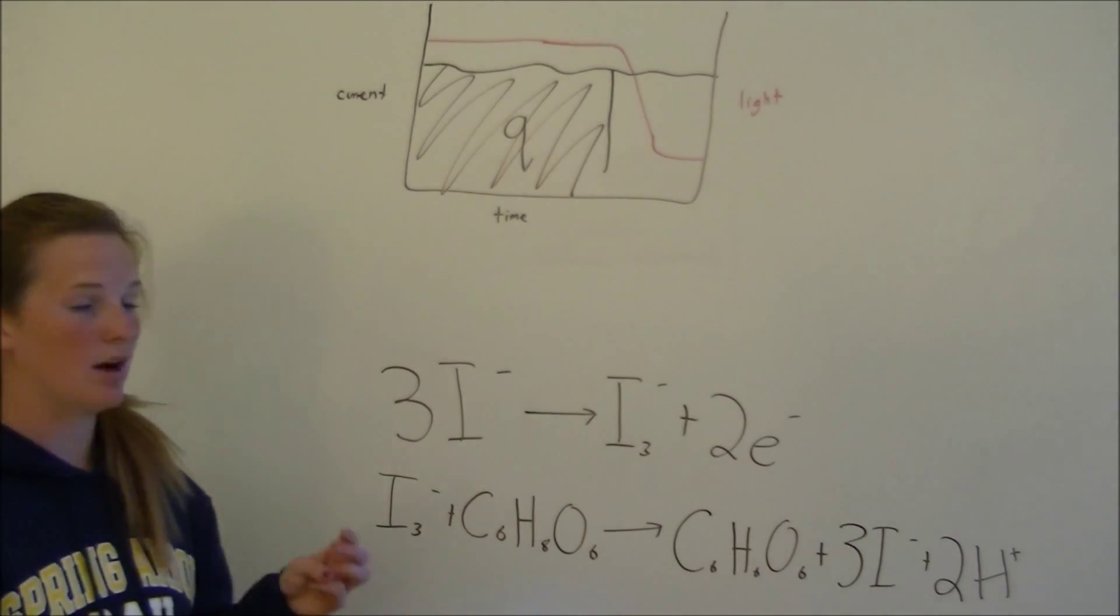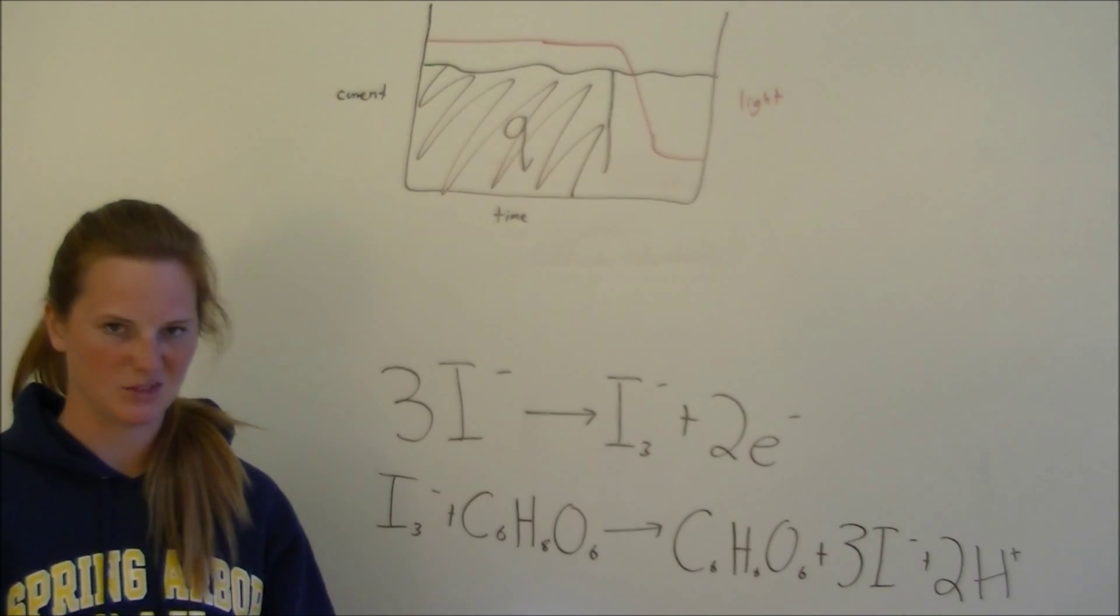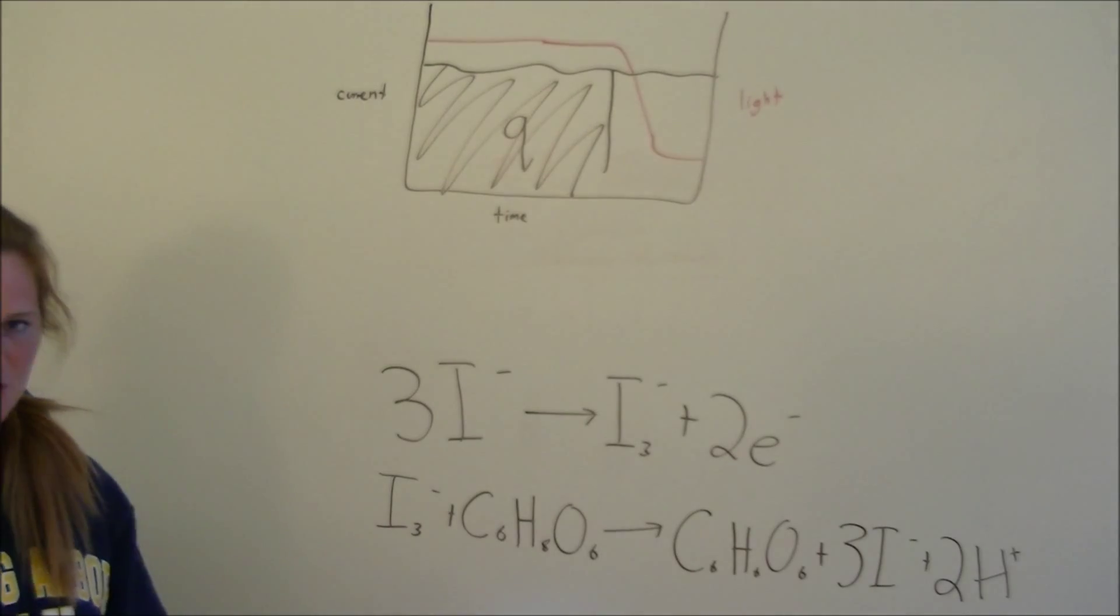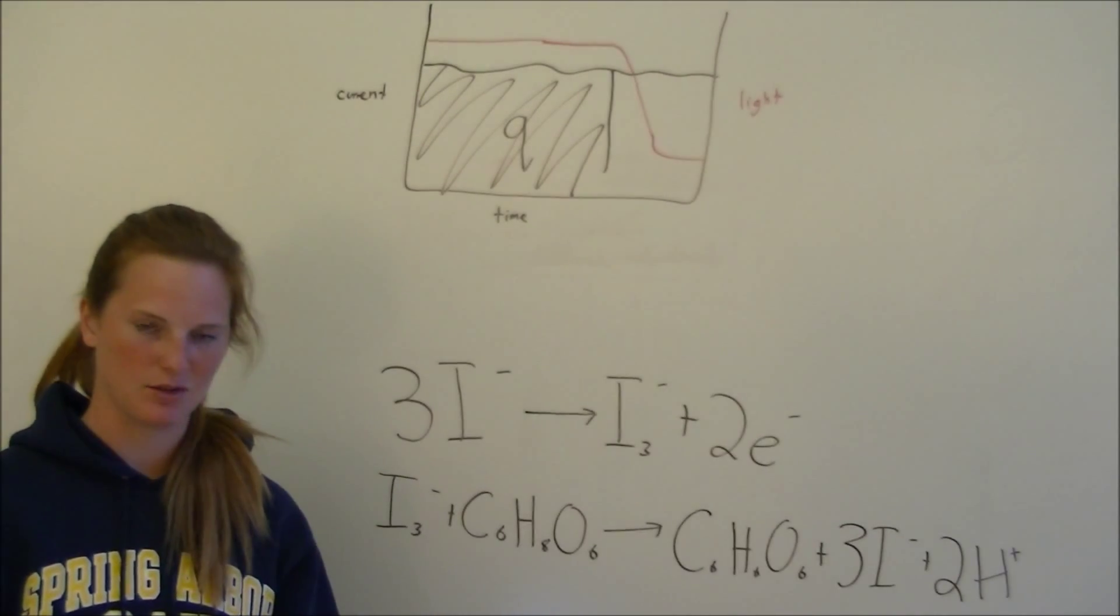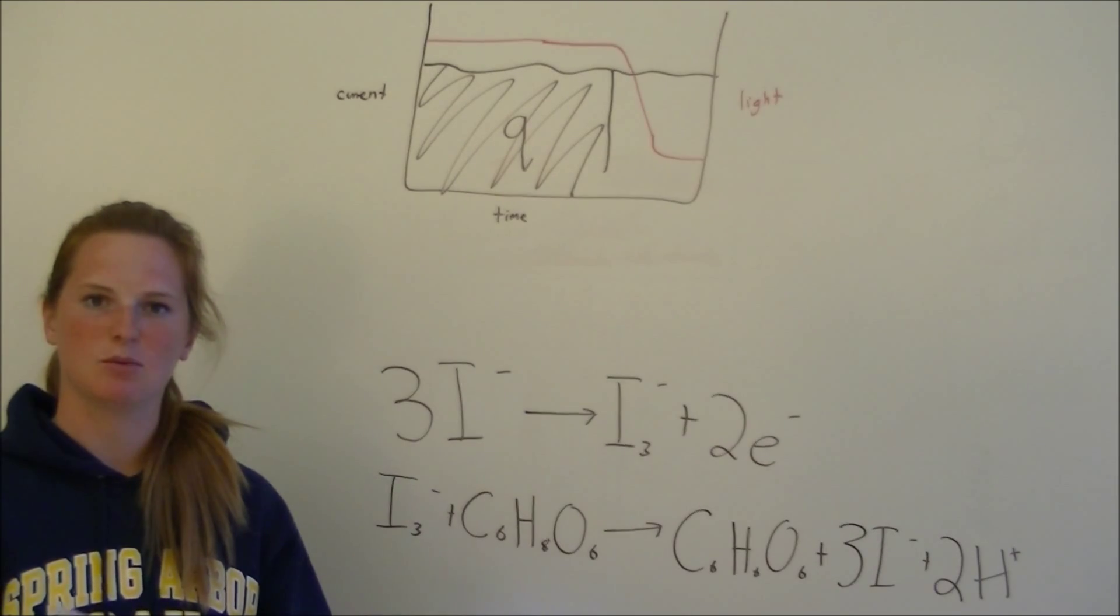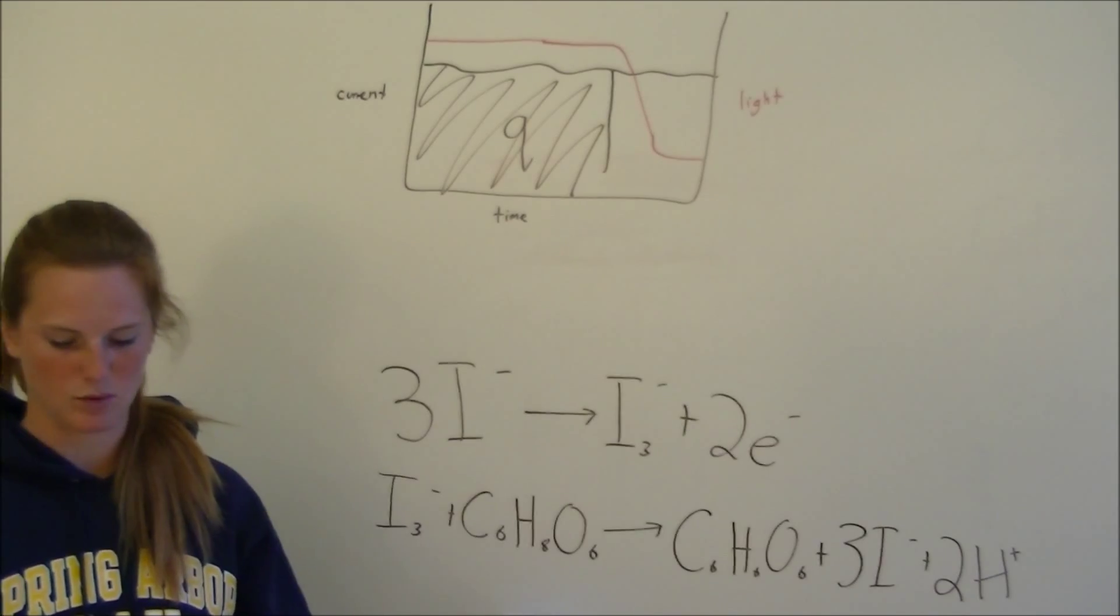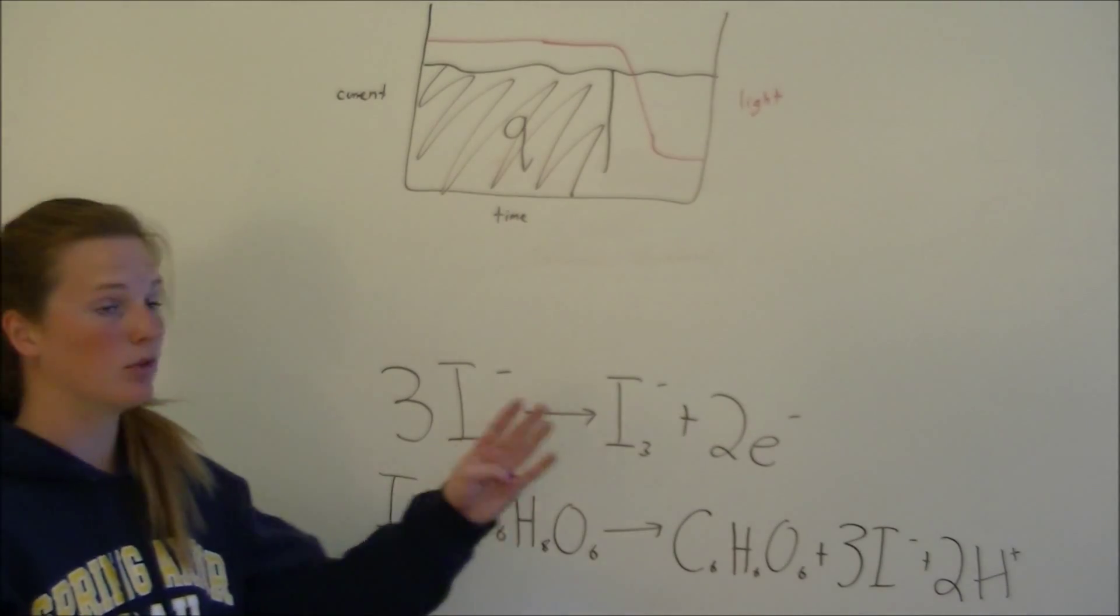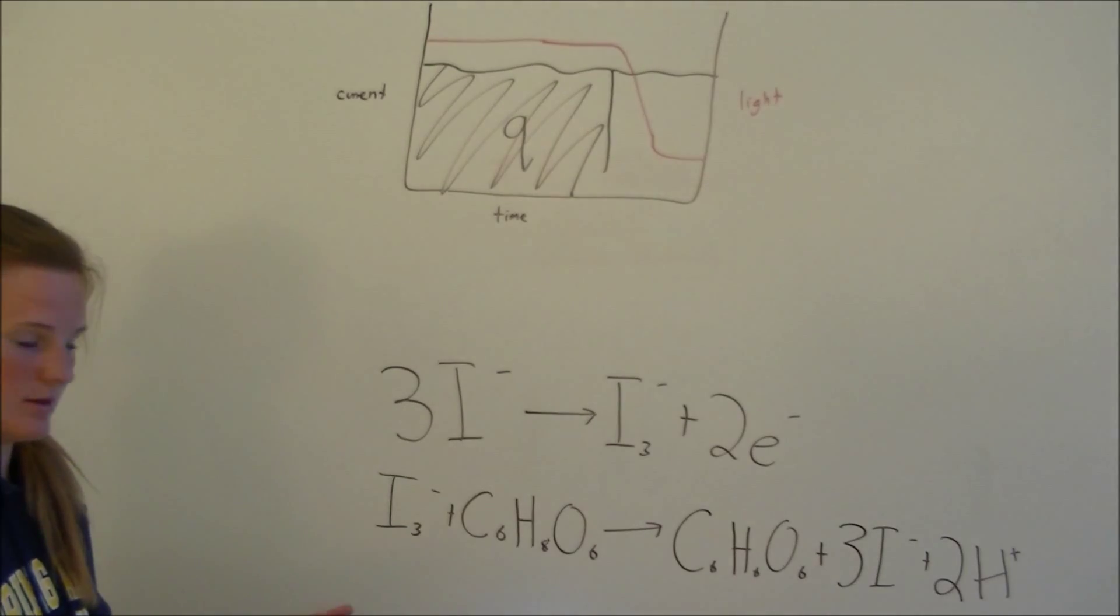We also have to know three other important numbers. The charge of an electron is 1.602 times 10 to the negative 19 coulombs. The number of electrons in a mole is 6.02 times 10 to the 23. And the molar mass of potassium iodide is 176 grams per mole. So we got four bits of information now.